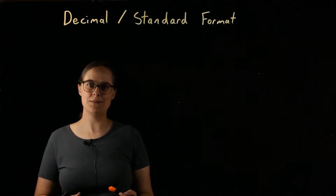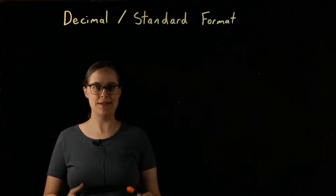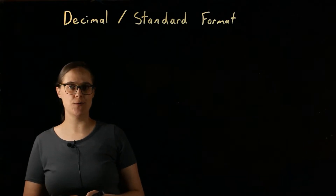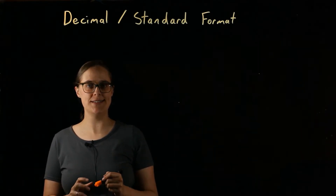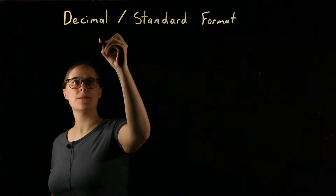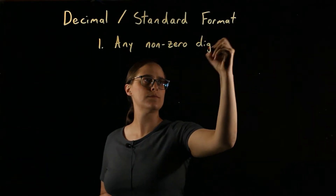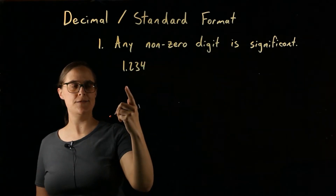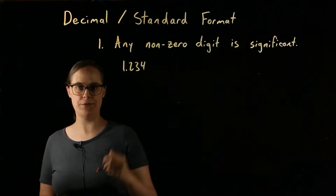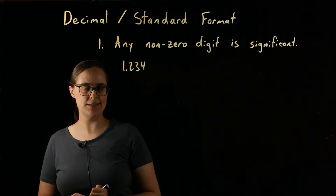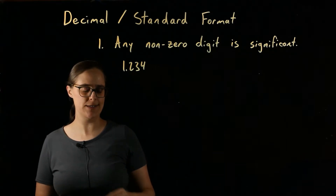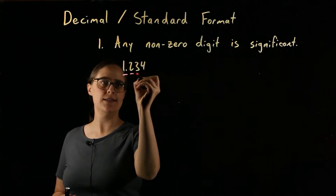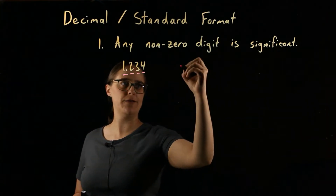So decimal, also called standard format, has more rules associated with it. First rule: any non-zero digit is significant. So in the value 1.234, you do not see any zeros. You see 4 non-zero digits, and all 4 of them are significant. This number has 4 significant figures.